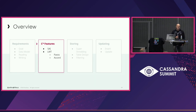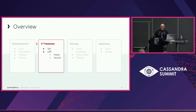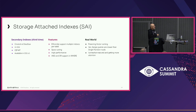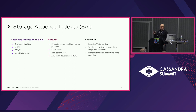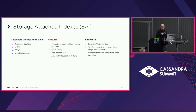The Cassandra features that are actually useful for this: the talk before this, Scott was saying SAI is great and it's the future — all the vector stuff runs on SAI, and it's good after all these years to have good secondary indexes. Lightweight transactions — Paxos and Accord — are the future as well. SAI is the third attempt at secondary indexes in Cassandra, available in OSS 5. It's very efficient at handling multiple indexes on the same table, very high performance, with AND and OR support.